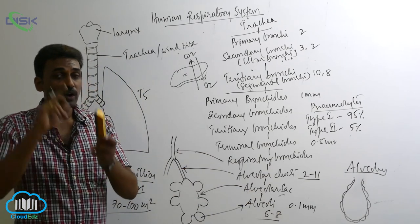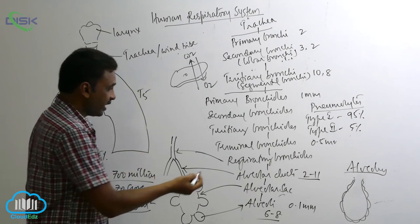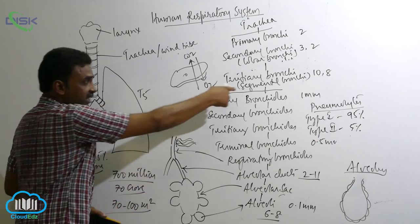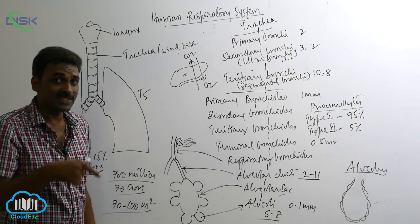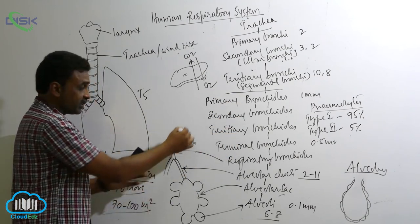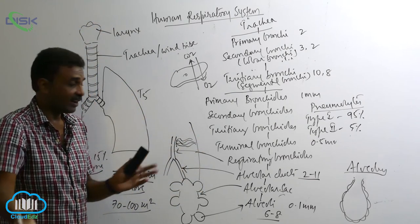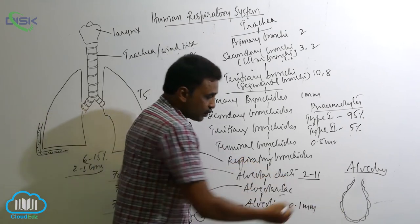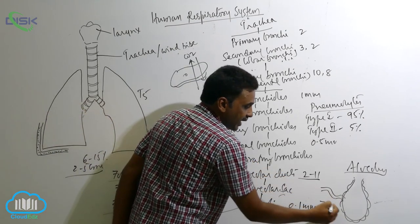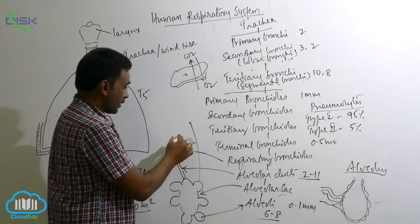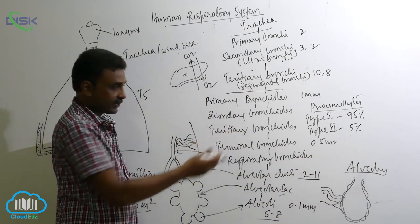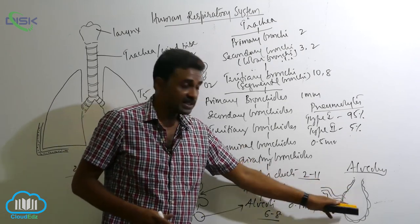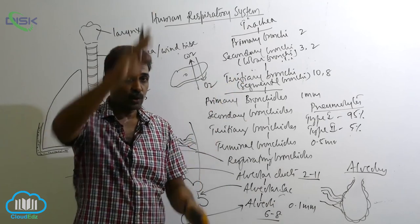The bronchioles and alveoli do not have C-shaped rings but are surrounded by elastic fibers. The bronchioles contain smooth muscles in their walls, and they are connected to the external wall of the lungs with the help of elastic fibers. In the alveolus as well, both elastin fibers and collagenous fibers are present on the outside, by which the alveolus is attached to the outer surface of the lung.